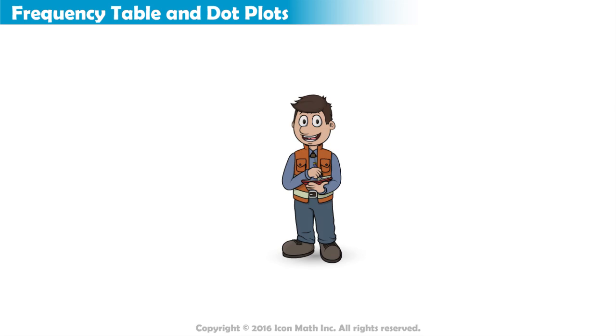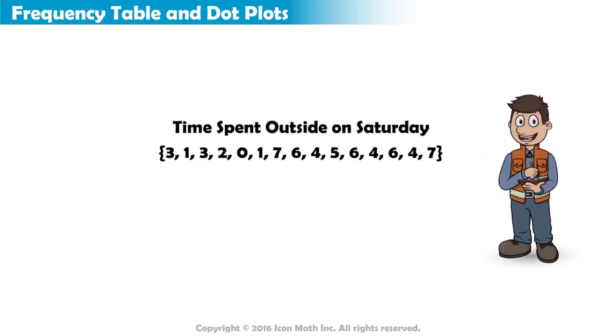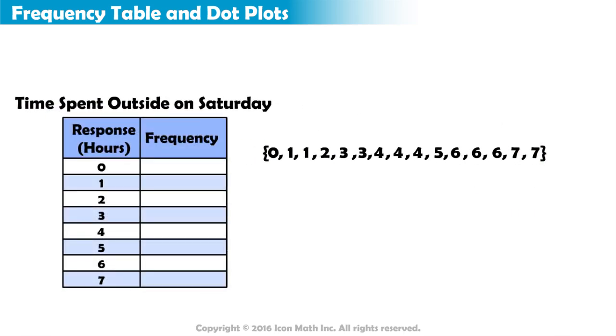James asked 15 people how many hours they spent playing outside on Saturday. These are the results from his survey. It helps to have the data values in order from least to greatest when creating a frequency table.